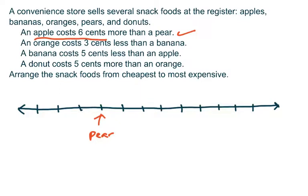Once I pin that down, however, I know that an apple costs six cents more, so if I count six places to the right of that, one, two, three, four, five, six, that would be the cost of the apple, puts me right there. So I at least have a sense of the relative locations of the pear and the apple.